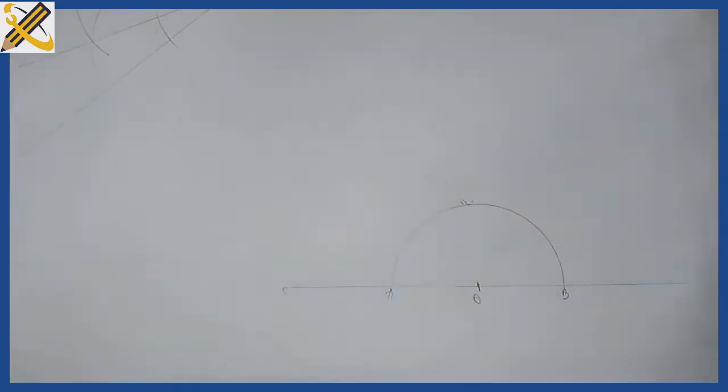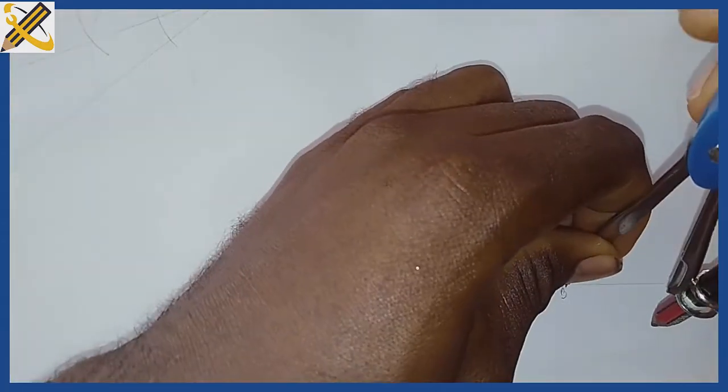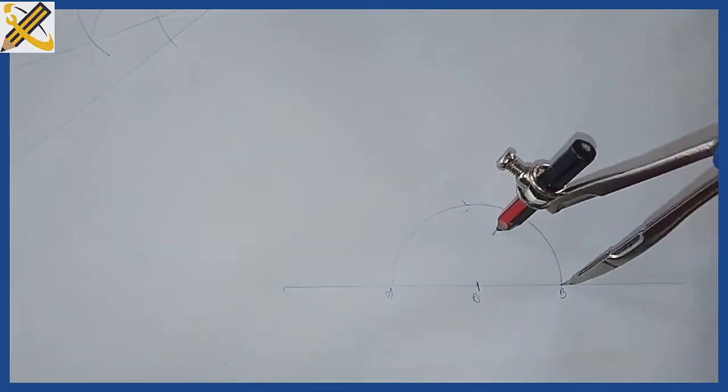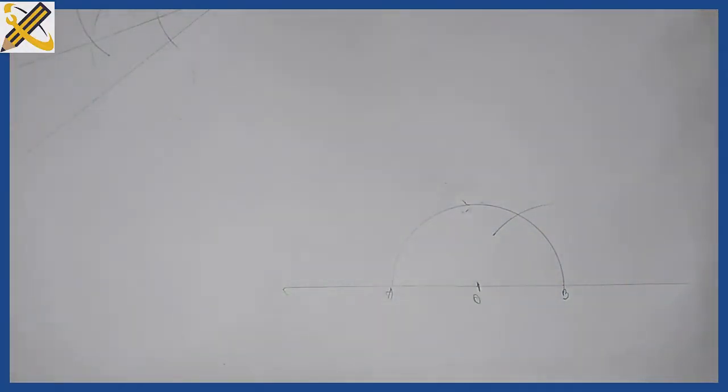With that same radius, come to either point A or B and place your compass there, then strike another arc using point B.